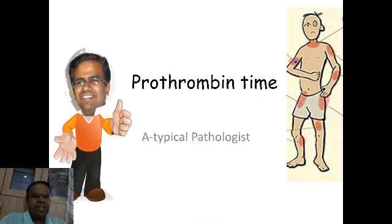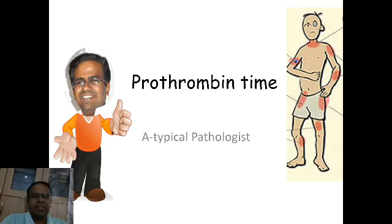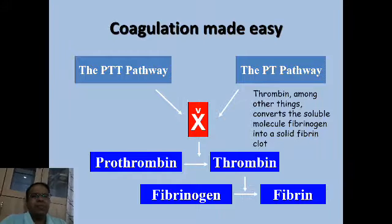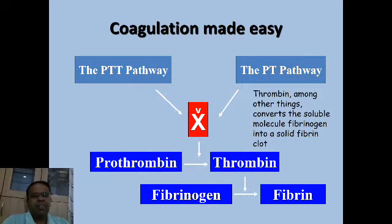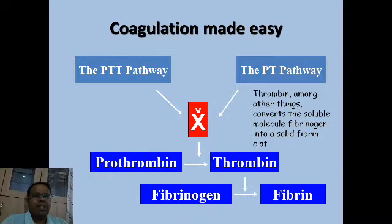Prothrombin time is the part of coagulation testing that evaluates the extrinsic pathway. Let's start with the intrinsic and extrinsic pathway — or rather let's call it the PTT pathway and PT pathway — because the intrinsic pathway is evaluated by the activated partial thromboplastin time (PTT) and the extrinsic pathway is evaluated by prothrombin time (PT).